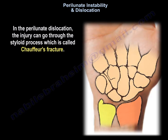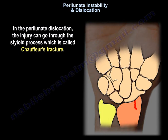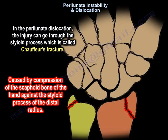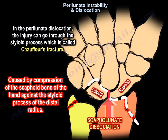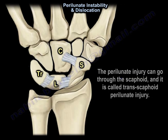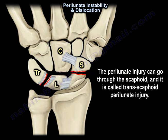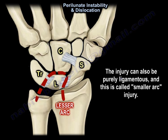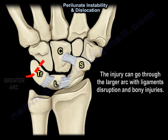In the perilunate dislocation, the injury can go through the styloid process and it is called a Chauffeur fracture. Or it can go through the scaphoid and it is called transscaphoid perilunate. The injury can also be purely ligamentous, called a smaller arc. The injury can go through the larger arc with ligament disruption and bony injuries.